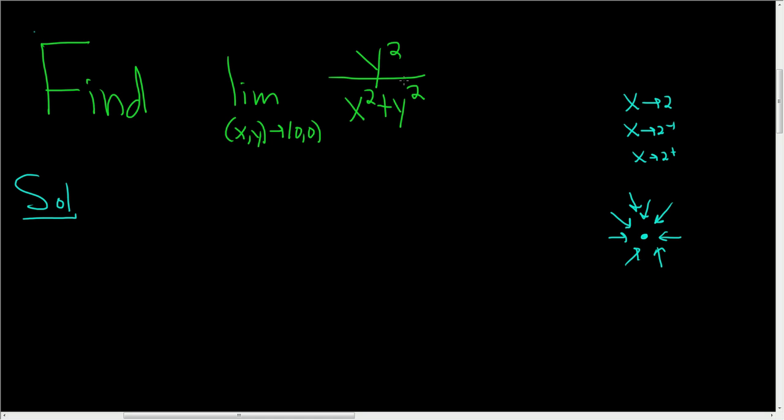Okay, in this problem the first thing you should always do in every single limit is plug in the numbers and see what happens. So if we plug in 0 for x and for y, we end up with the unfortunate case of 0 over 0, so that does not work. So what we'll do is we'll try to see if this limit actually even exists.